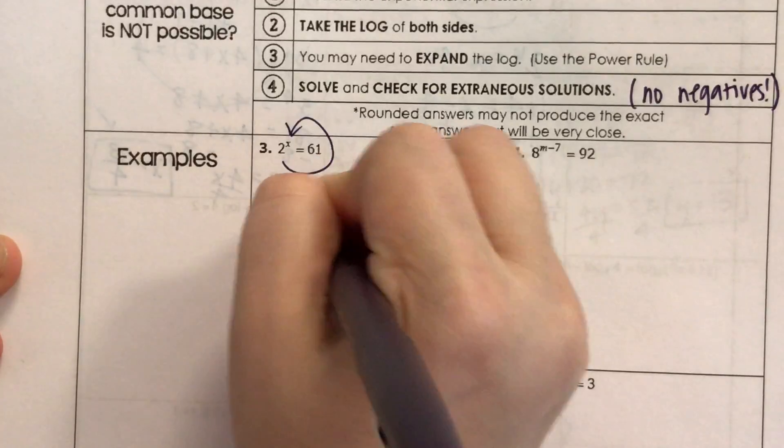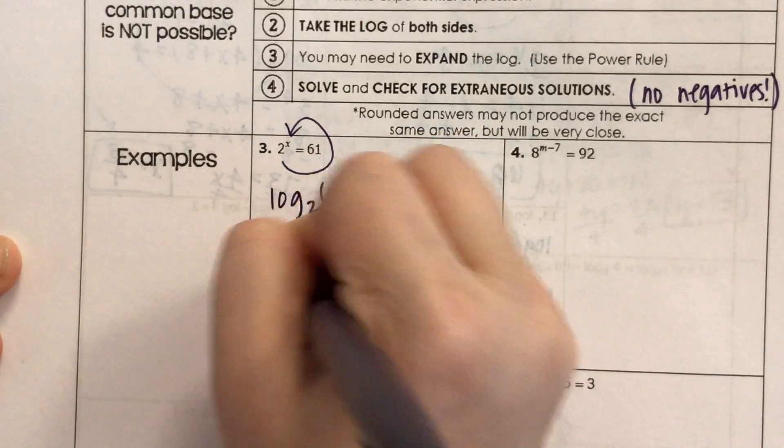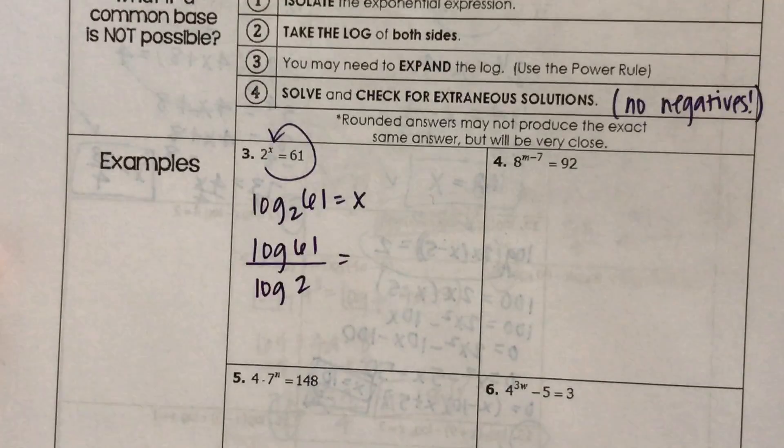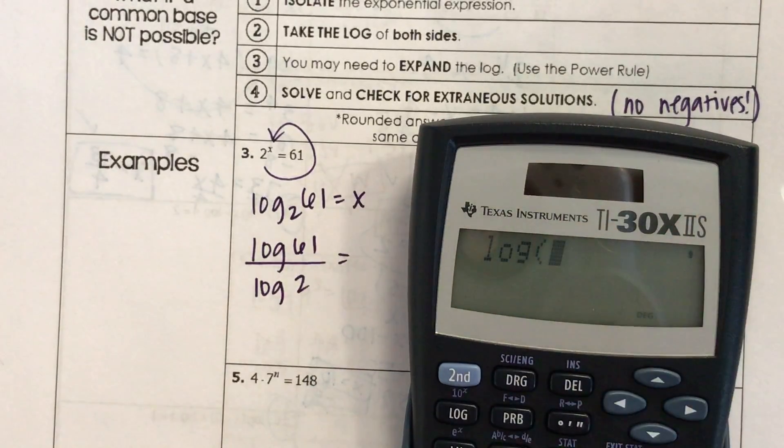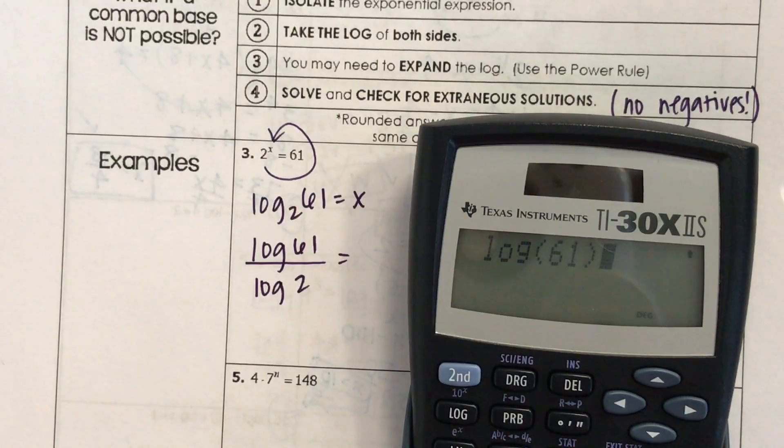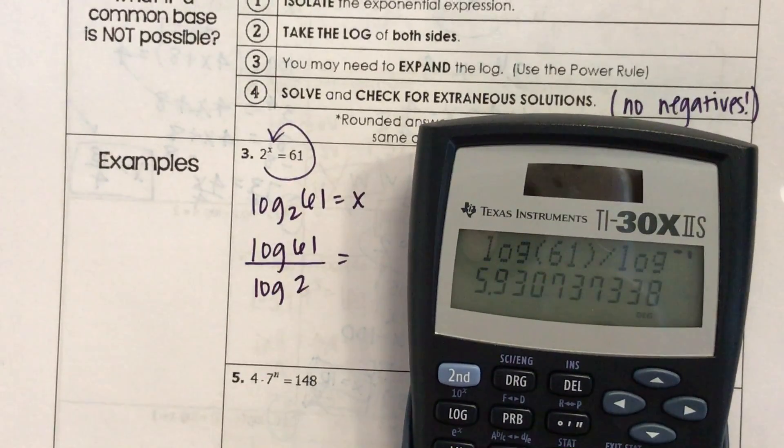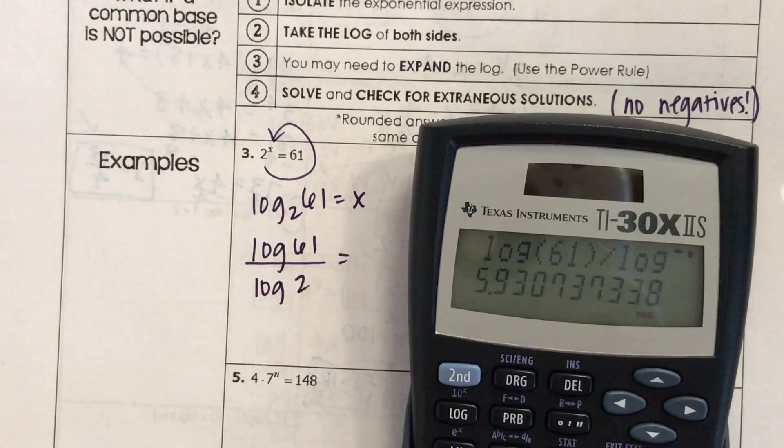Log of 61 divided by log 2 equals, let's bring back our handy-dandy calculator. Log of 61 divided by log of 2, and you get 5.9307.